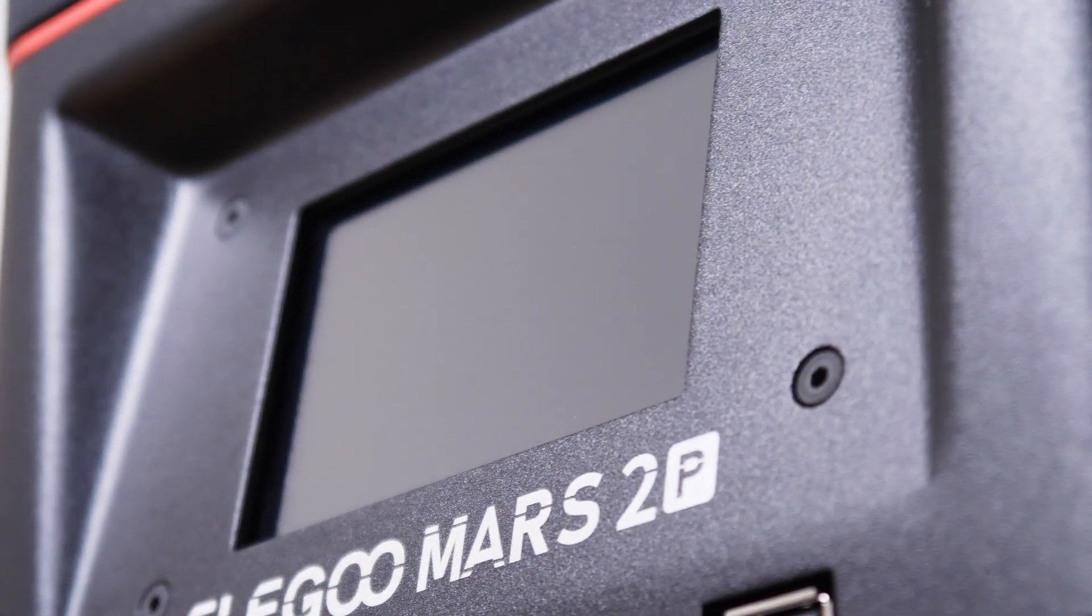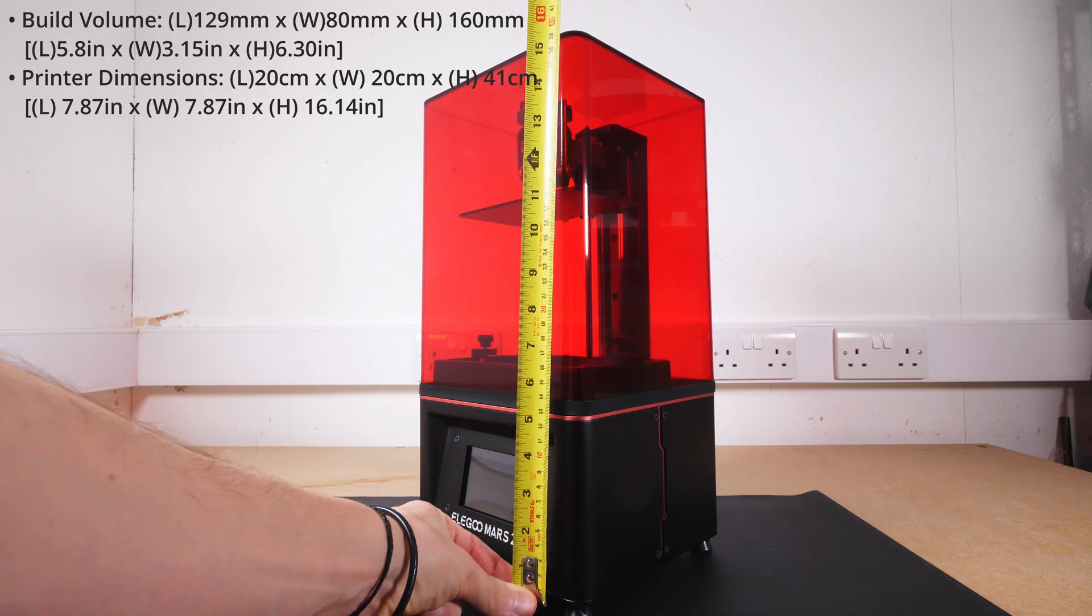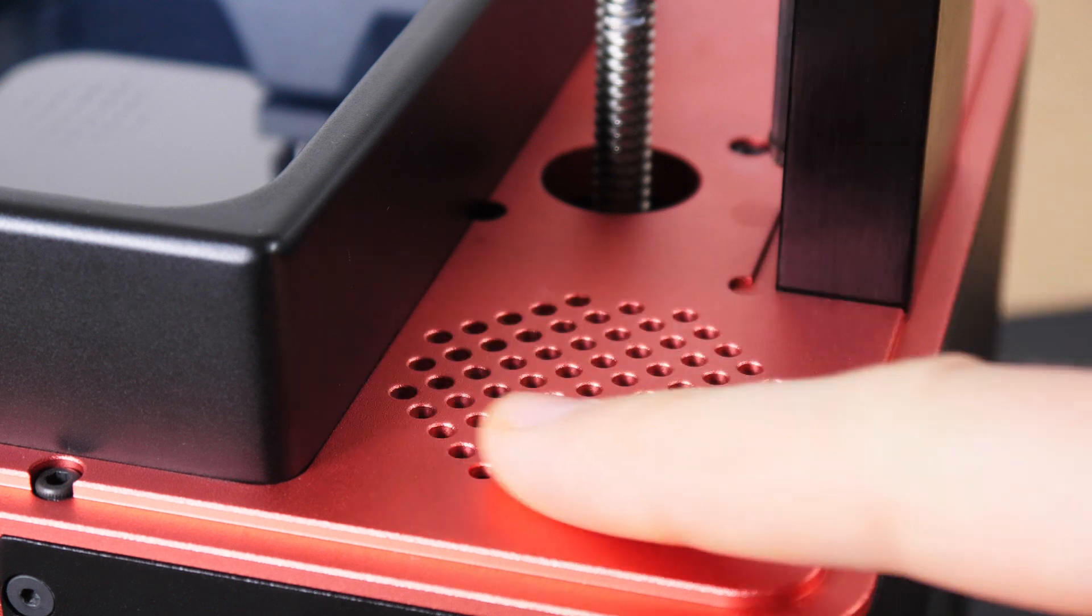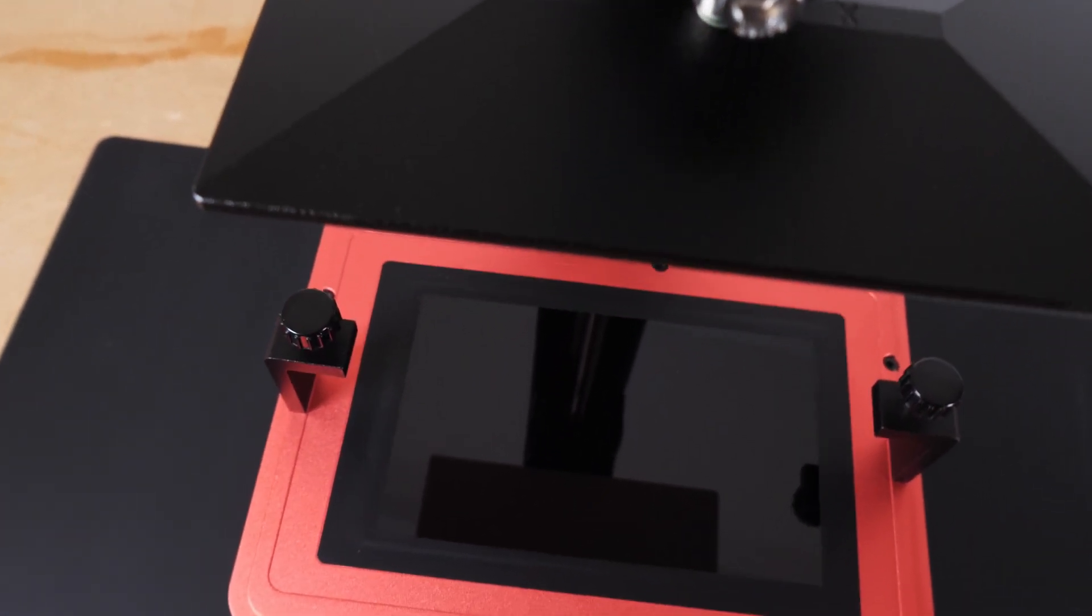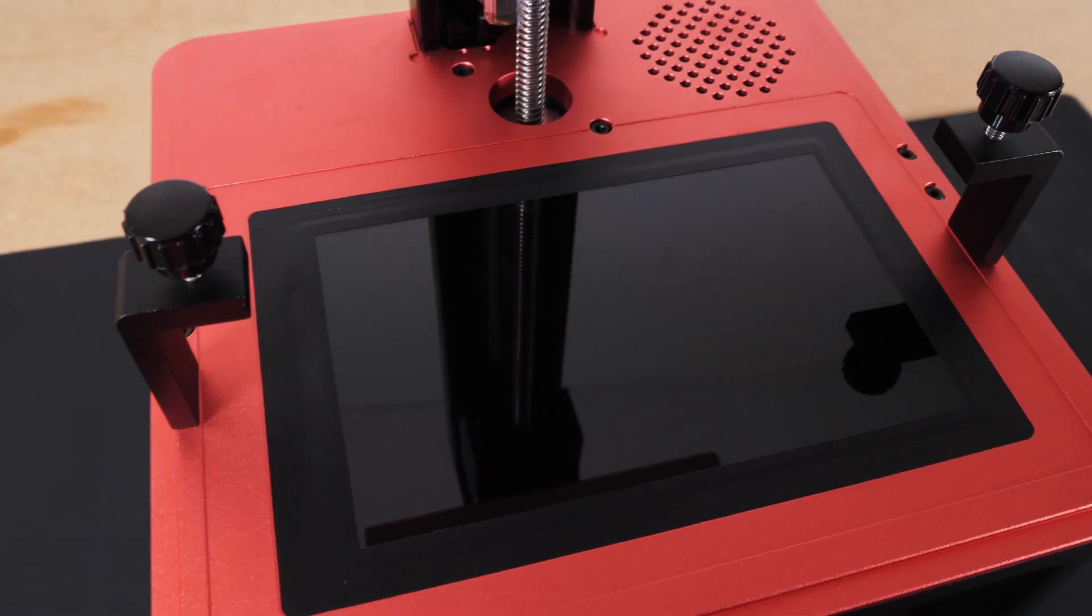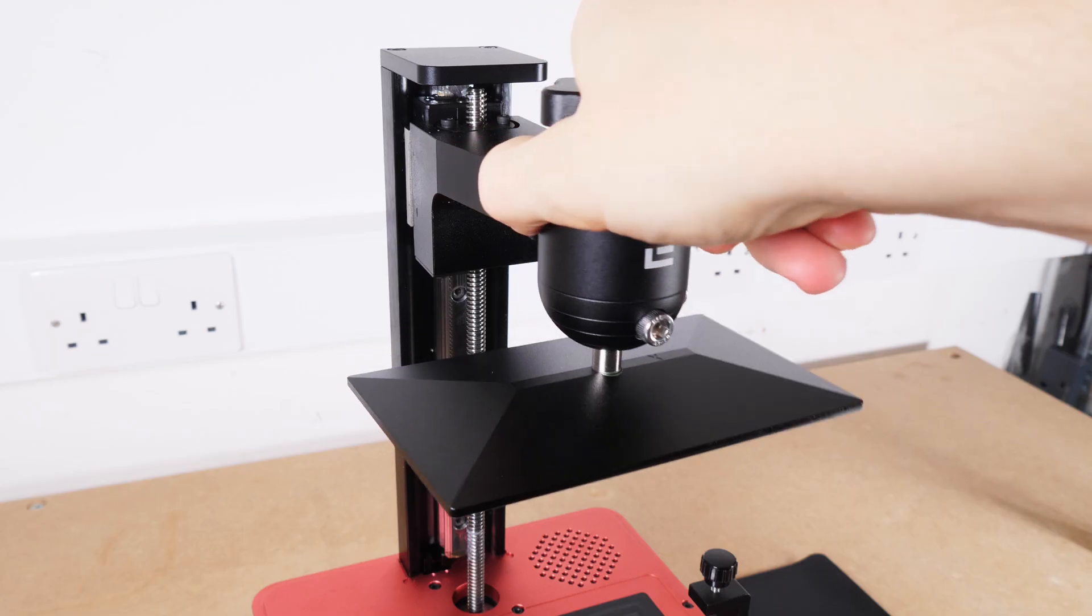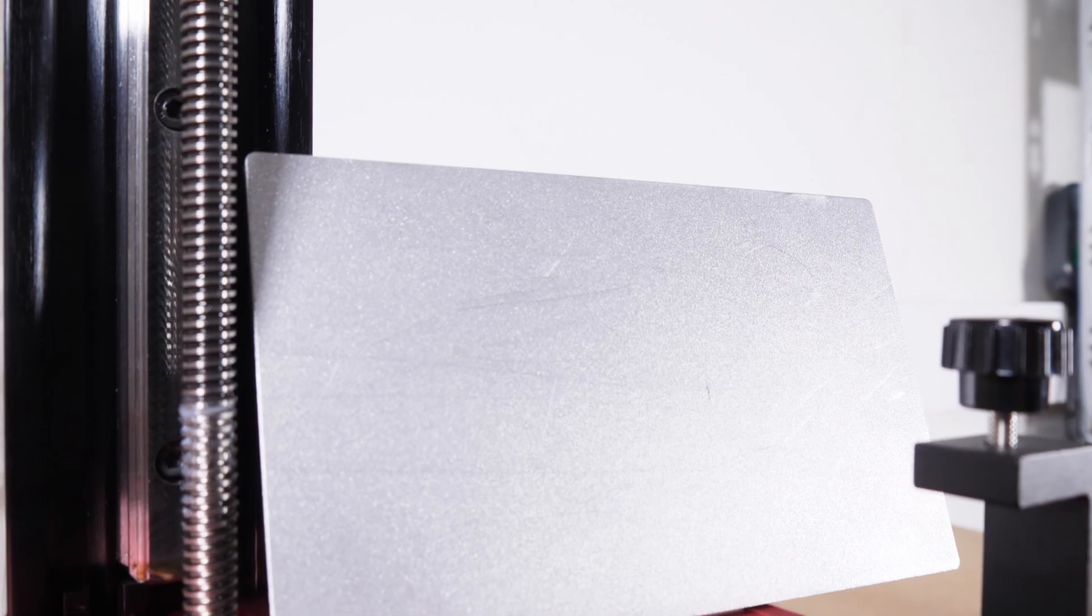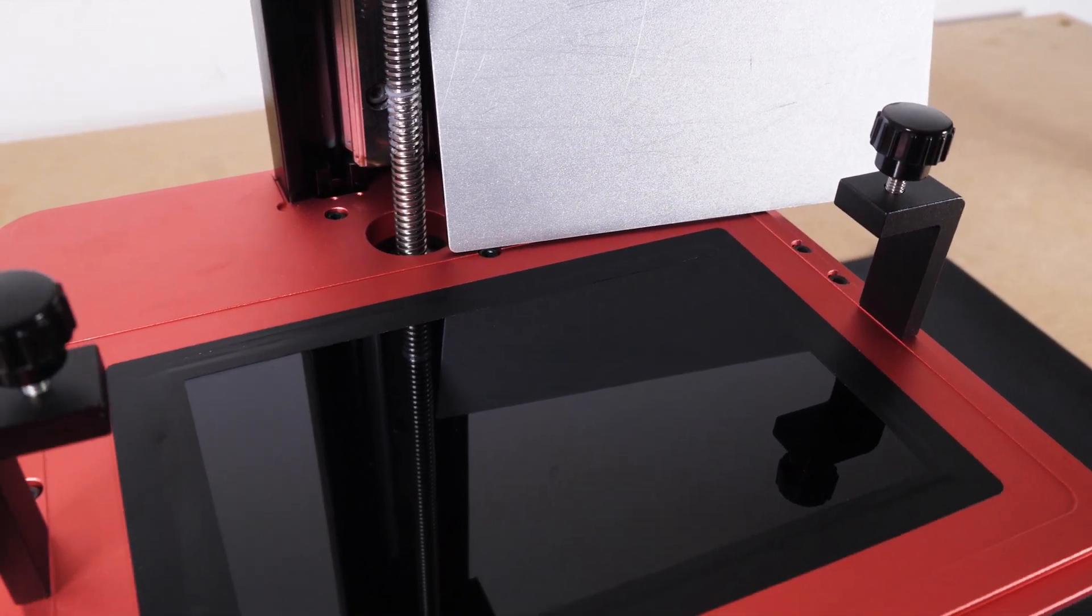Without getting too bogged down into the technical details, here they all are. Most notably for me is the printer's actual size and build volume, which was a little smaller than what I grew accustomed to due to my FDM printing background. Other things to note is the built-in carbon filter, which I'll come back to, and a 2K monochrome screen. In a nutshell, the monochrome screen means faster prints, and the 2K is usually sold with the idea that the bigger the number, the better. But this is just not true, as it's closely linked with the build volume.